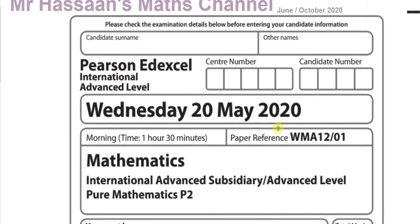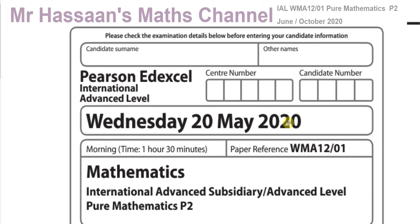Before I start, if you would like a PDF copy of this paper, you can go to the description below and click the link to the playlist for this paper, where I will collect together all the other questions I answer from this paper. In the description of the playlist, you will find a link to the PDF, and also links to other A-level material. You'll see links to some of my other A-level and IGCSE material that you might be interested in watching.